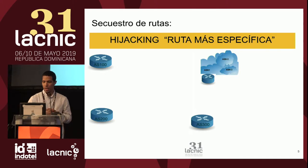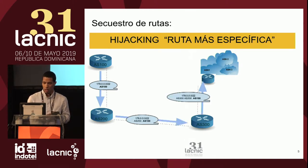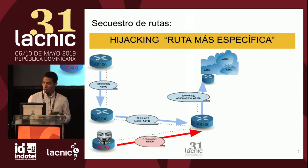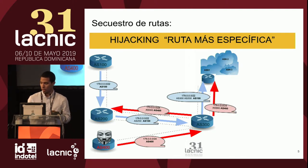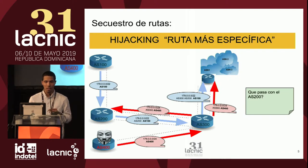Tenemos el segundo ejemplo: hijacking por ruta más específica. De igual manera, el AS100 anuncia el mismo prefijo y los demás lo aprenden y lo propagan. Aparece igualmente el atacante, pero en este caso anuncia la ruta más específica, el /24 de este prefijo. El AS300 lo aprende y lo propaga. En este caso el AS200 se ve afectado por este anuncio del atacante, ya que prevalece la ruta más específica, y todo el tráfico irá hacia el atacante.